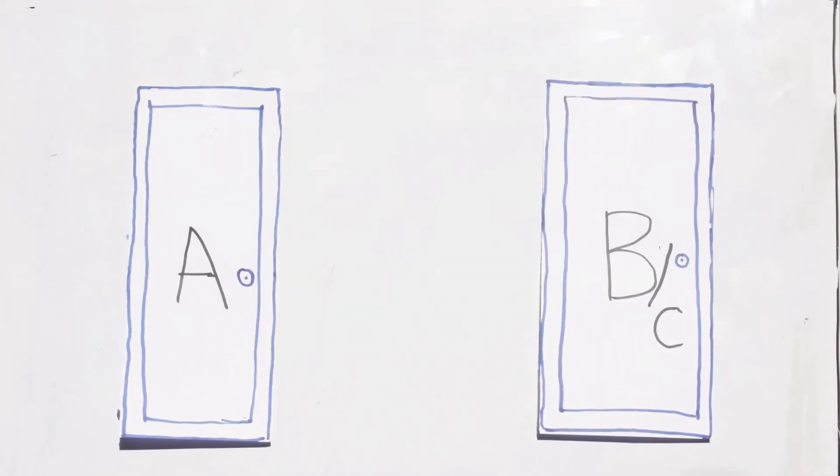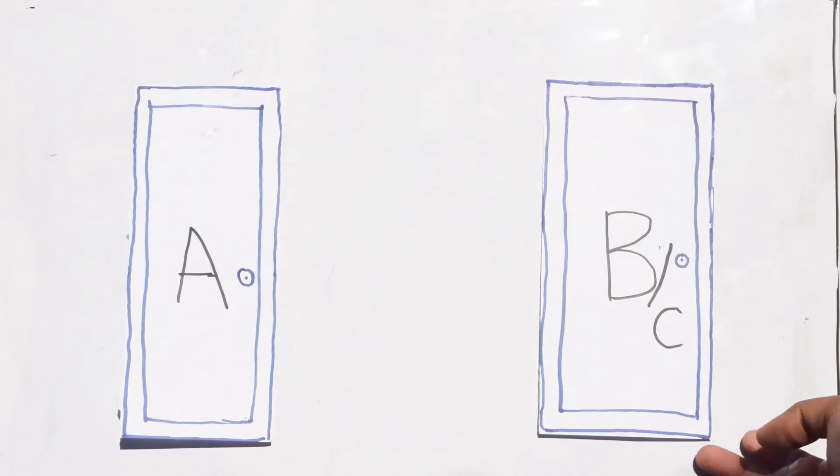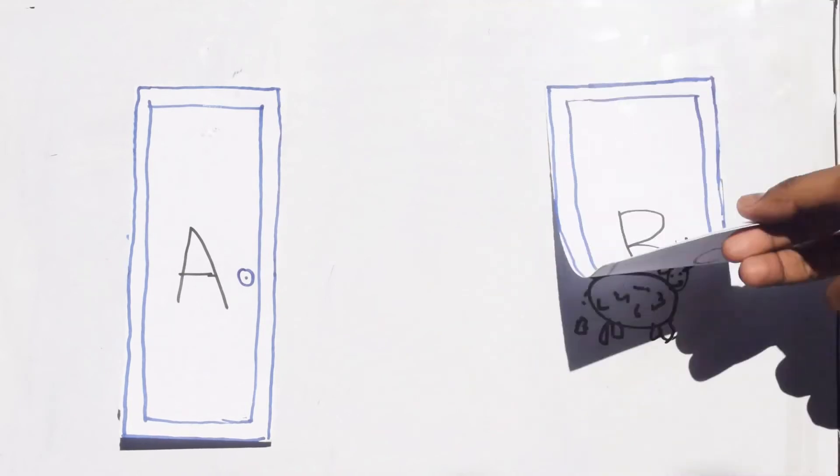But here is the twist. Let's consider two situations. First, that you chose the right door to the million dollars on an initial guess. Second situation being that you chose the wrong one.